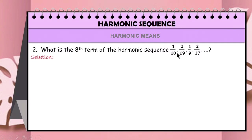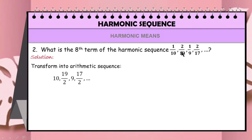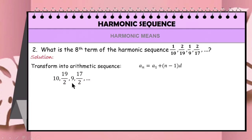First, we should transform the sequence into an arithmetic sequence. So we have 10, 19/2, 9, 17/2, and so on. Then we are going to use the formula a_n = a_1 + (n − 1)d to determine the 8th term of this arithmetic sequence. But first, we need to find the common difference.